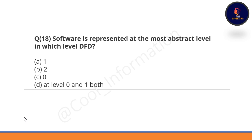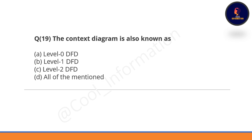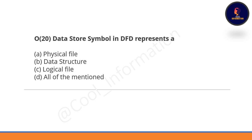Question 18: Software is represented at the most abstract level in which DFD level? It is represented at Level 0 DFD — Option C is correct. Question 19: The context diagram is also known as Level 0 DFD — Option A is correct, a very fundamental question. Question 20: The data store symbol in DFD represents a physical file, data structure, logical file, or all of the mentioned — all of the mentioned is correct, Option D.